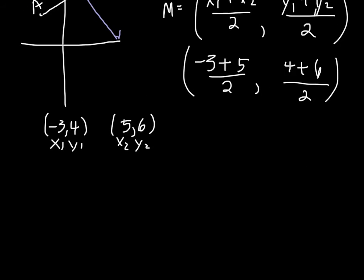Now we simplify this, and we have 2 over 2 and 10 over 2, which is 1, 5. So our midpoint is (1, 5).